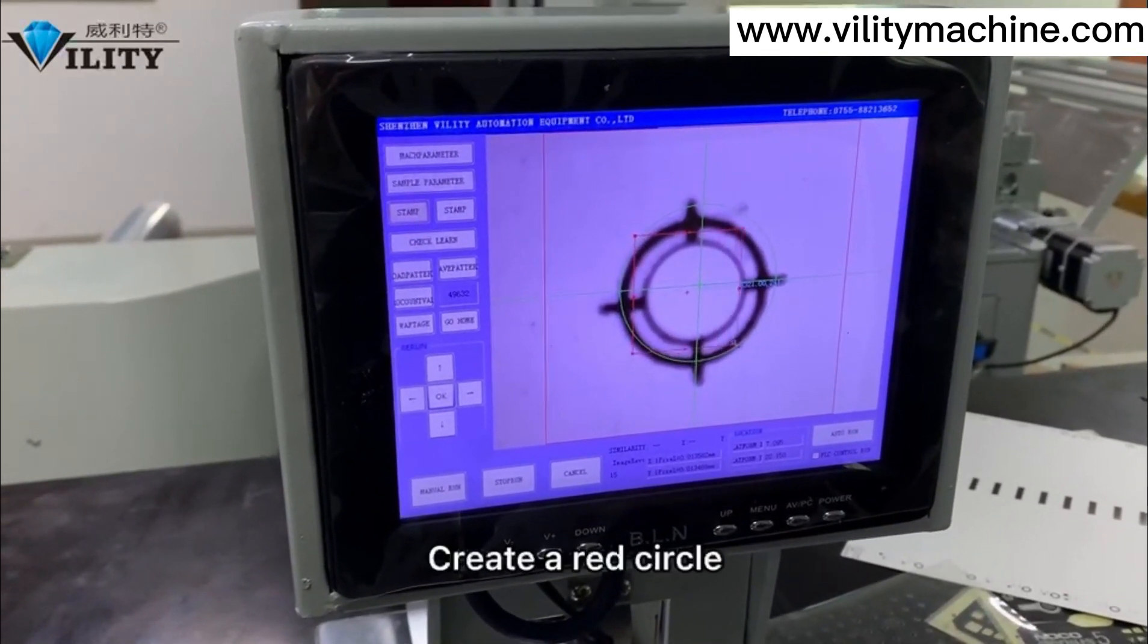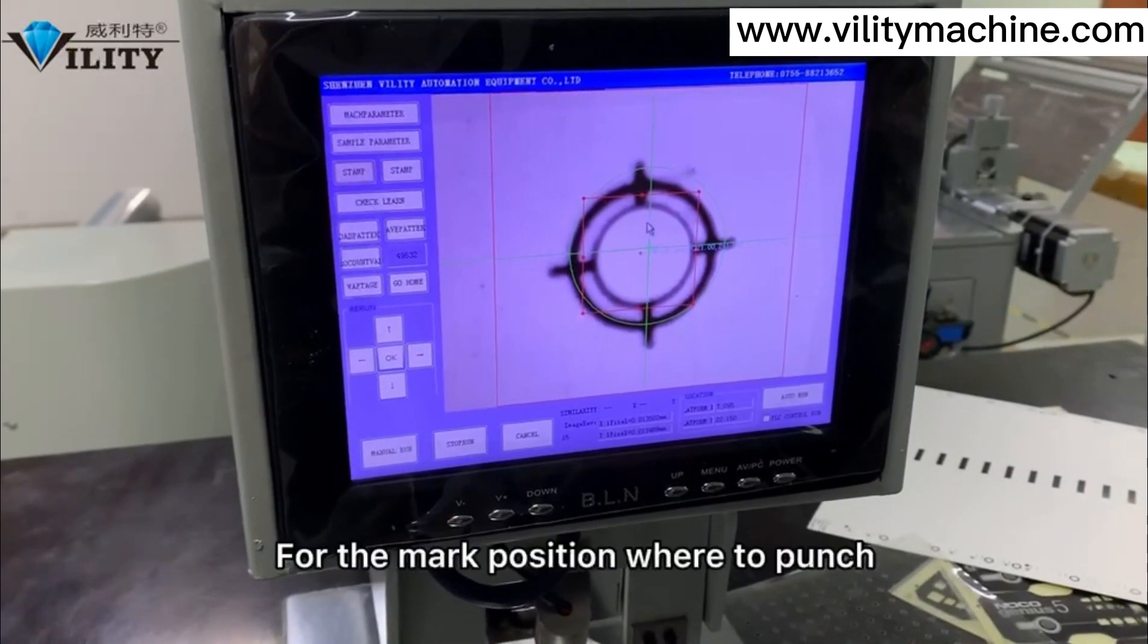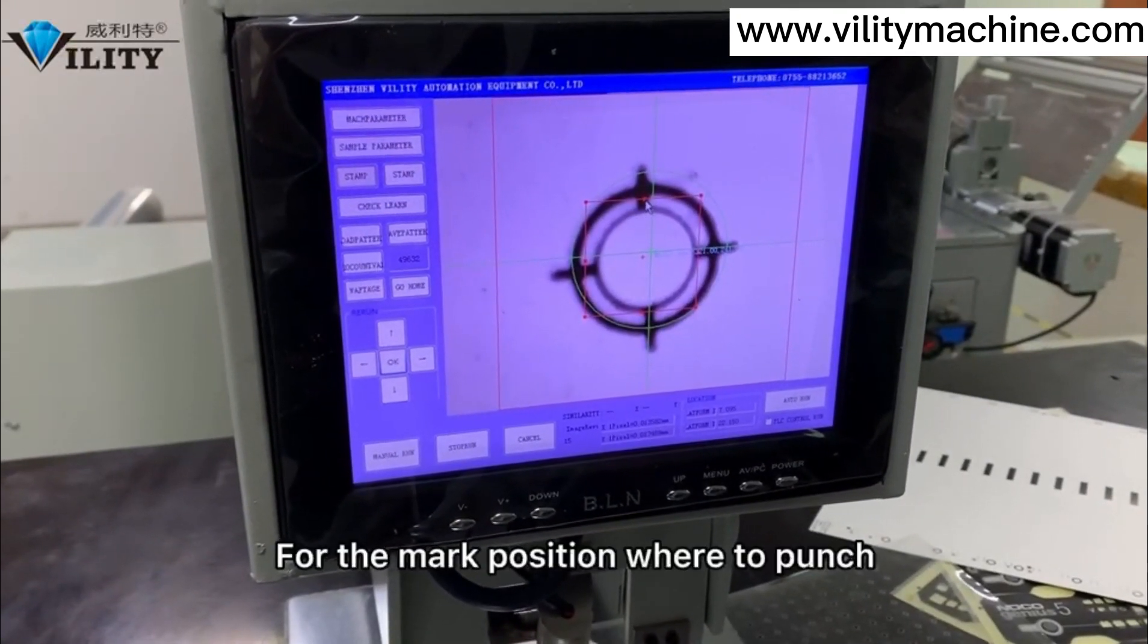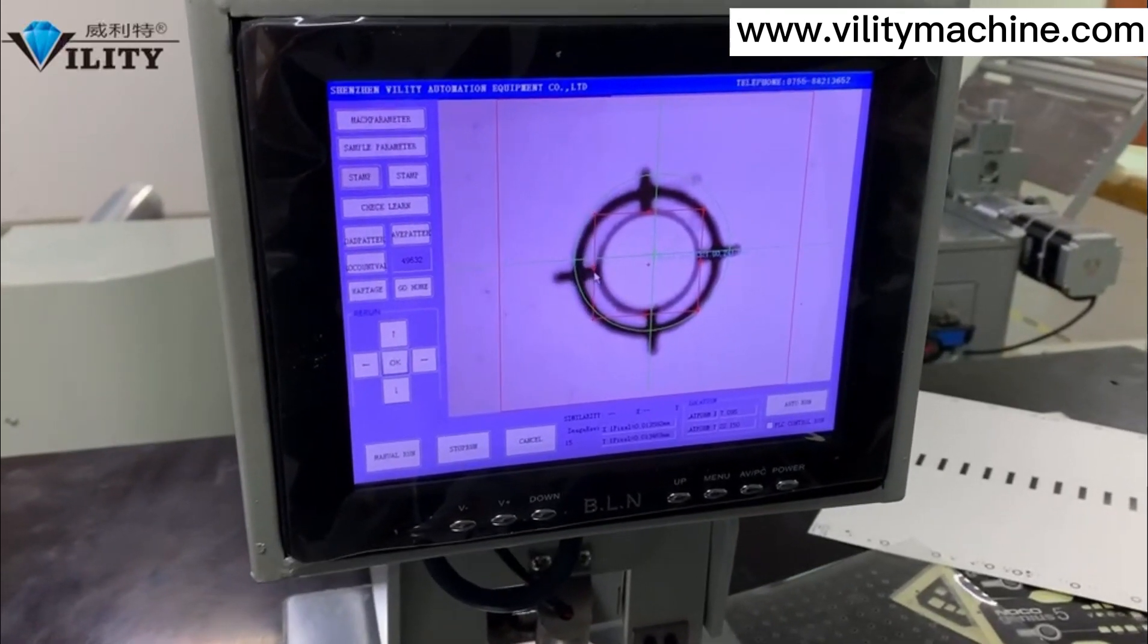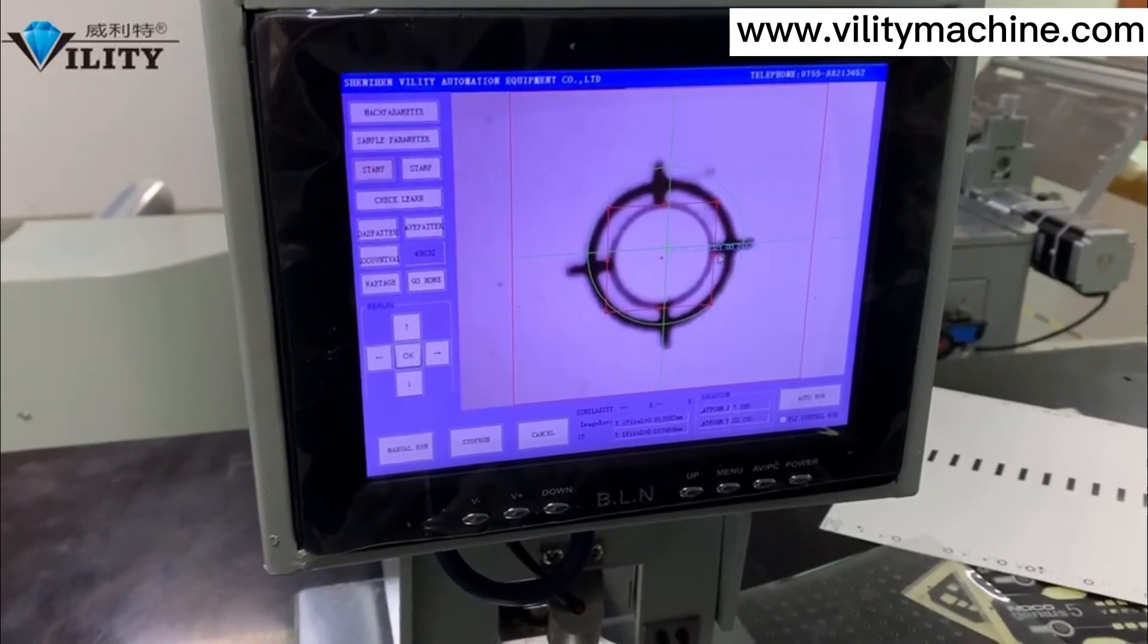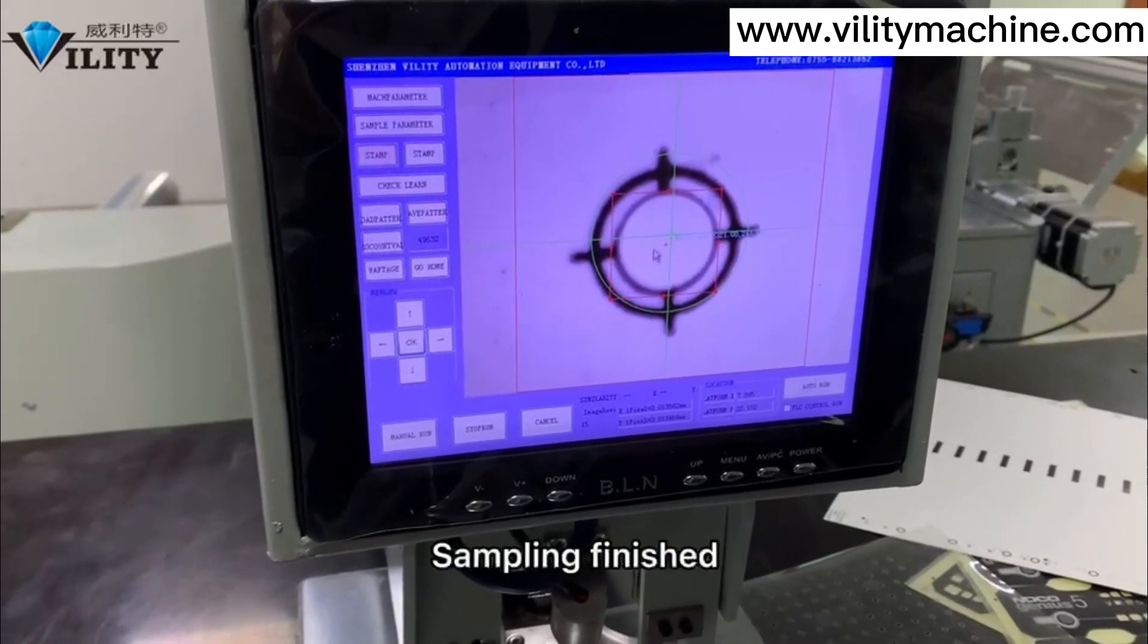Create a circle for the mark position where to punch. Make the circle align with the mark. Sampling finished.